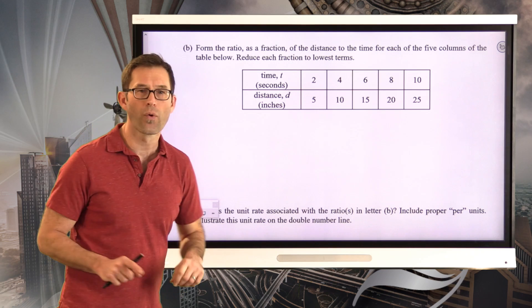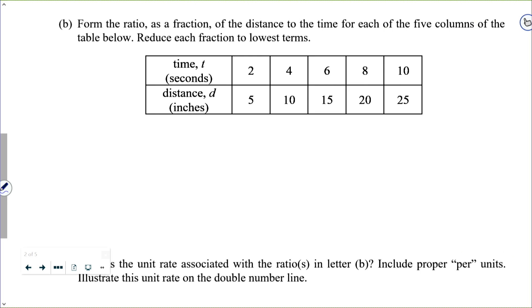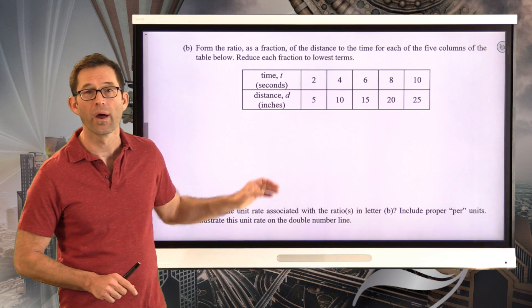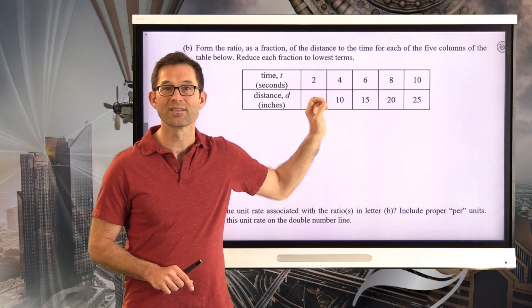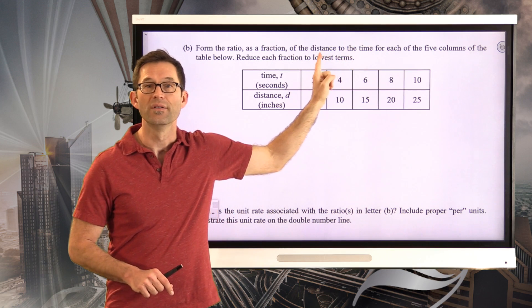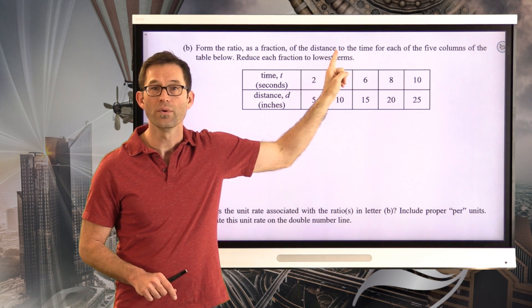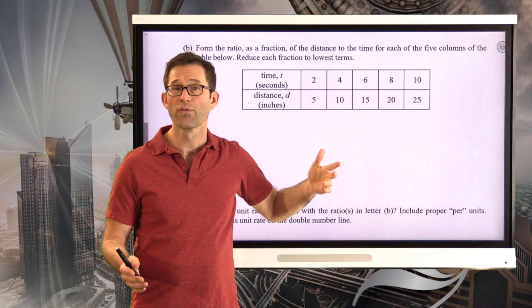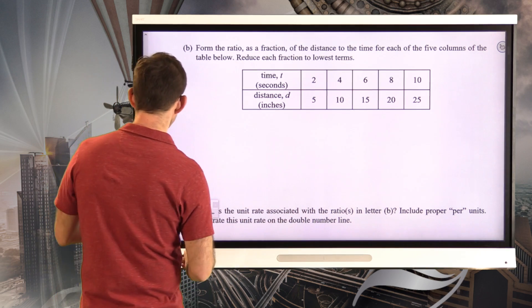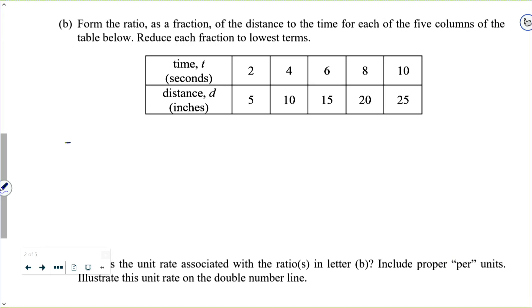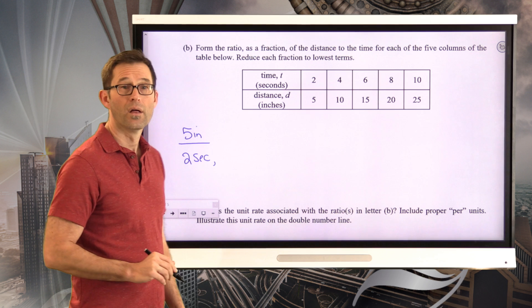Letter B asks us to form the ratio as a fraction of the distance to the time for each of the five columns of the table below. Reduce each fraction to its lowest terms. Now, keep in mind, we want the ratio of the distance to time. Distance is in the numerator, two is the fraction bar. Time is in the denominator. So for example, the first one is simply going to be five inches per two seconds.